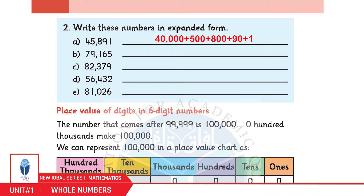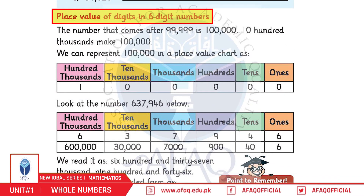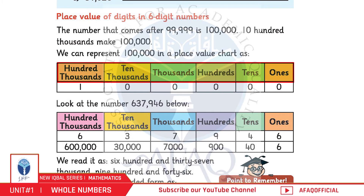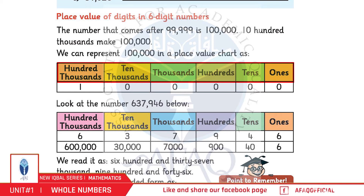Place Value of digits in 6-digit numbers. बच्चो, 6-digit numbers में place values होंगे: Ones, Tens, Hundreds, Thousands, Ten Thousands, and Hundred Thousands (1,00,000).